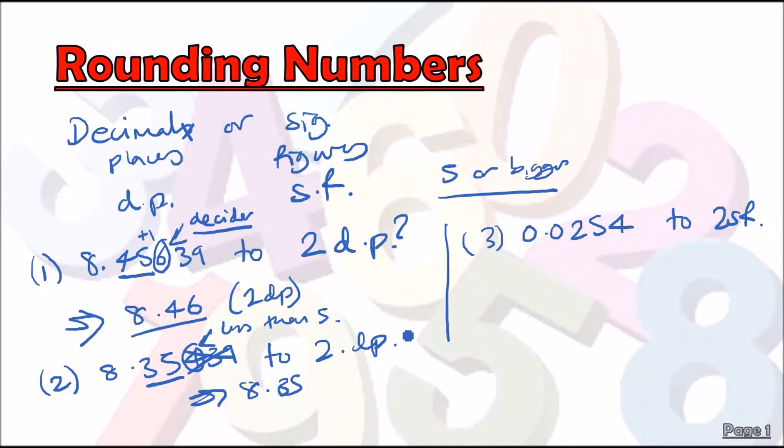Again we look at this number, and this is our decider. As it's less than five, hence the solution is going to just be 0.25. If this was five or greater, then this would be 0.26.